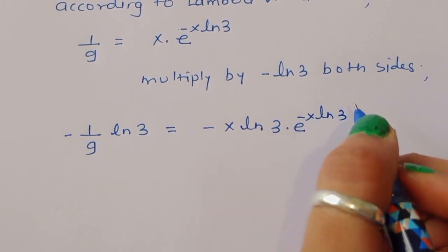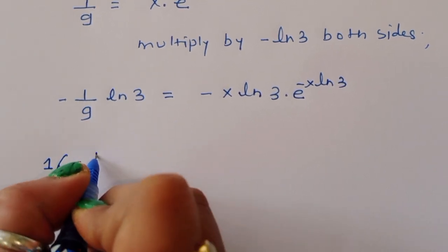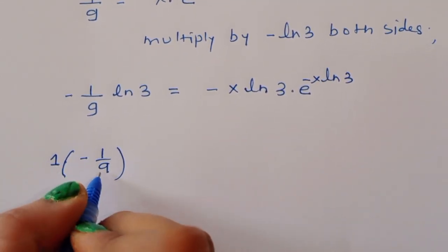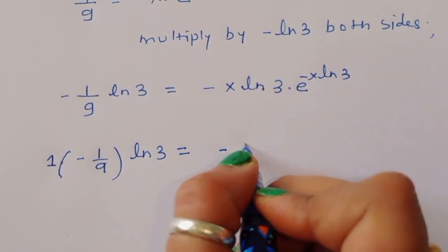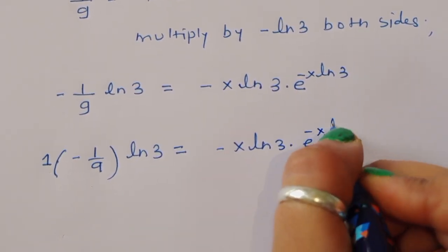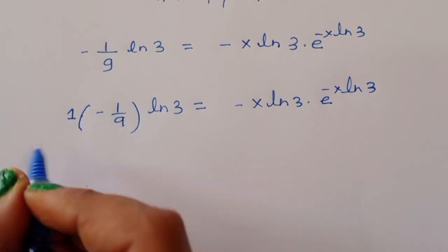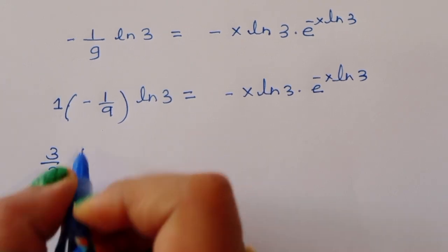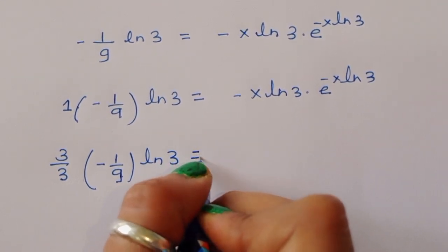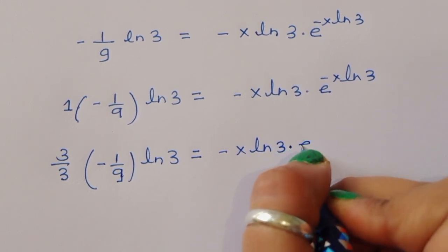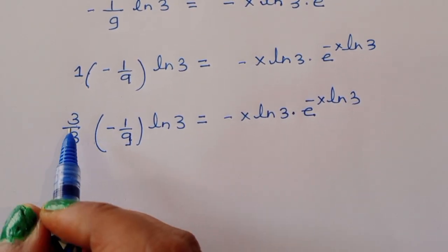We can write the left side as minus (1/9)·ln3. Multiplying by 1, which we write as 3/3, so we get (3/3) times minus (1/9) times ln3 equals minus x·ln3 times e^(-x·ln3).